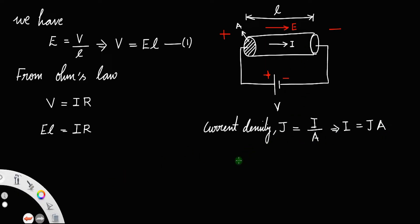Also, the resistance of this cylindrical conductor will be the resistivity times L by A, where ρ is the resistivity, L is the length of the conductor, and A is the cross-sectional area.